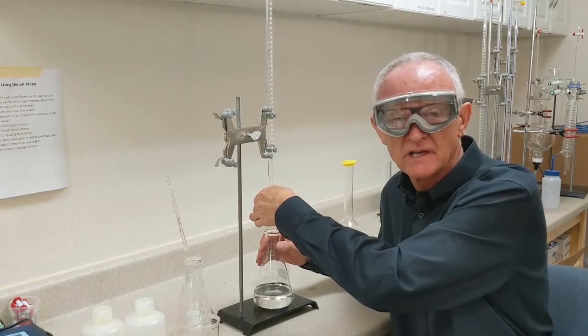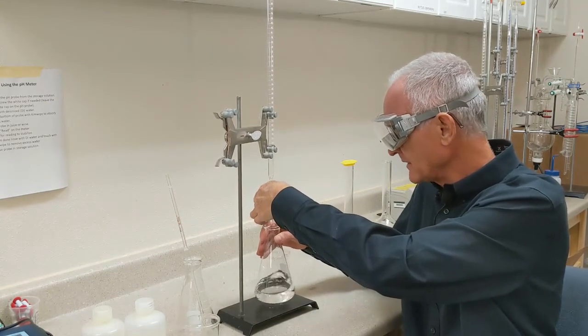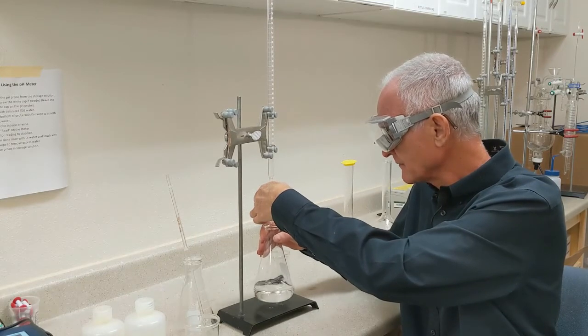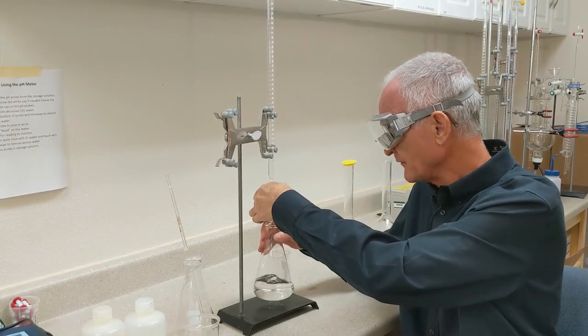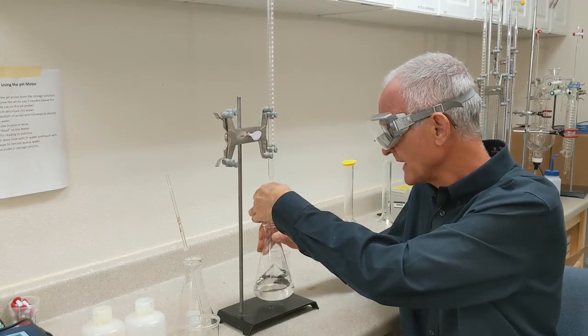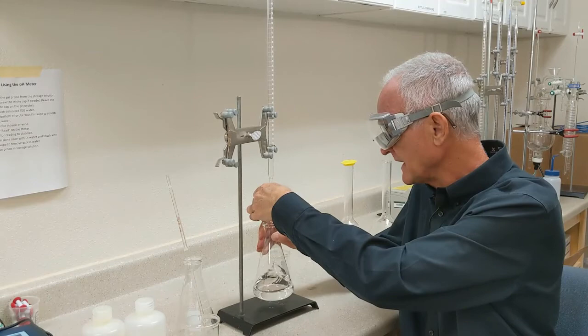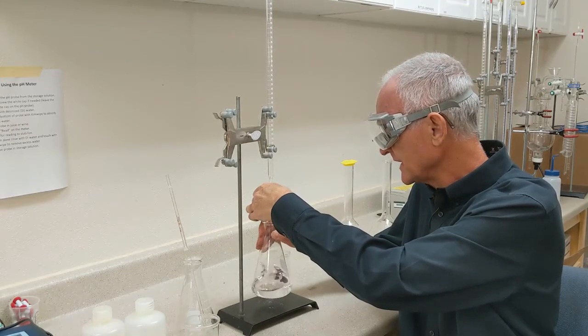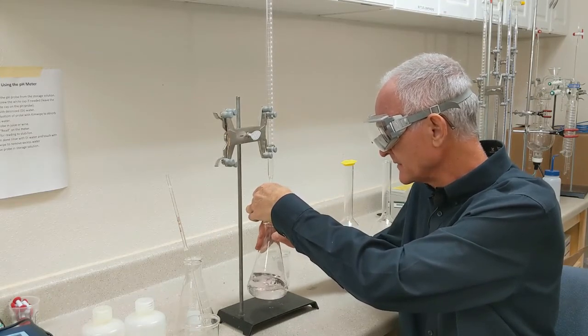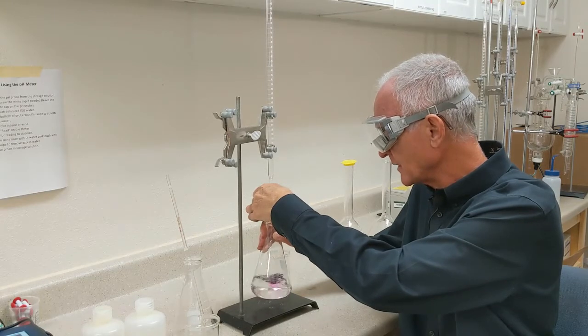I'm redoing this. I did a new 200 mils of water. Put phenolphthalein in that. I neutralized the water. And then I added five mils of wine. And now I'm titrating once again to try to get to that nice pale pink endpoint.